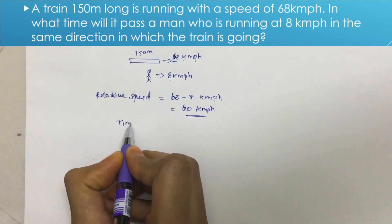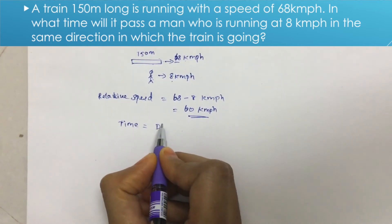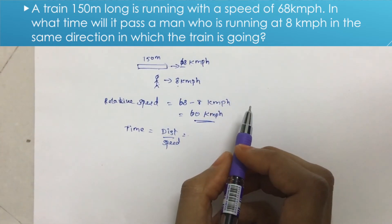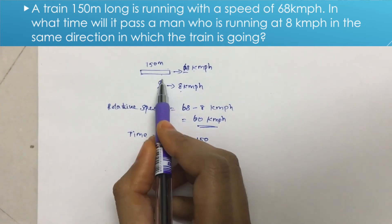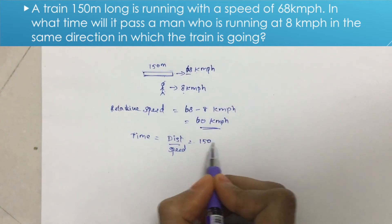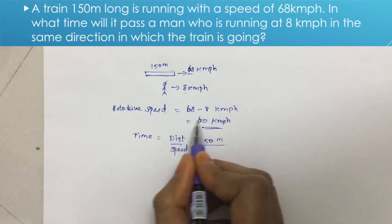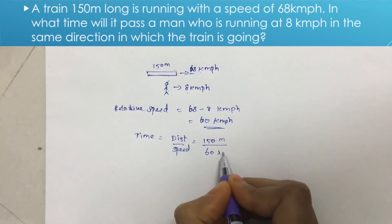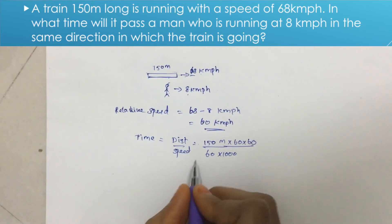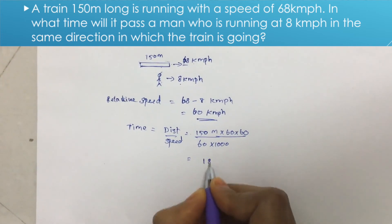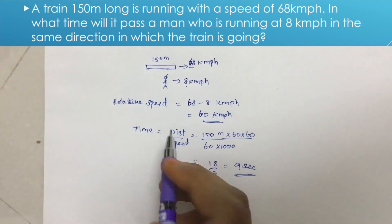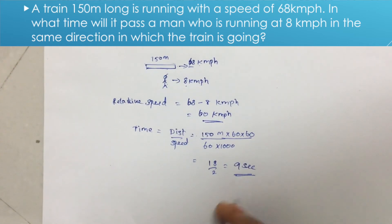So the time is obtained using time equals distance by speed. Distance is 150 meters — the man is one point. So time equals 150 meters divided by 60 km per hour converted to meters per second, giving 9 seconds. So the train crosses the man in 9 seconds.